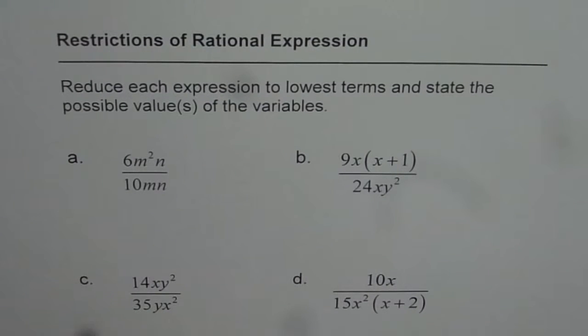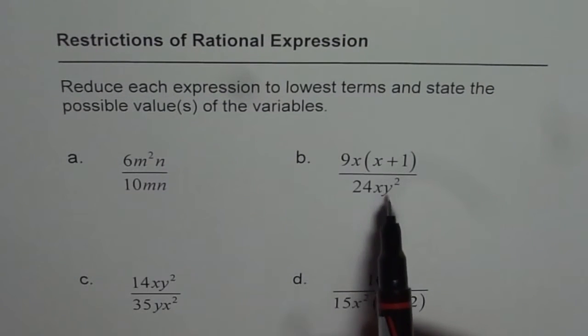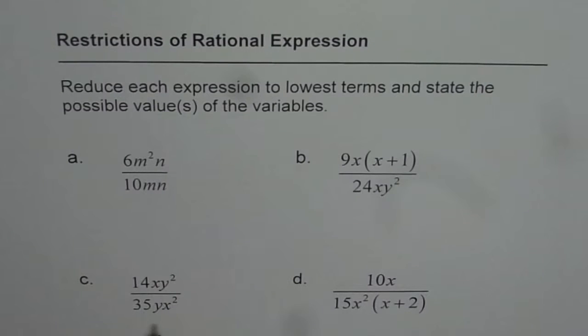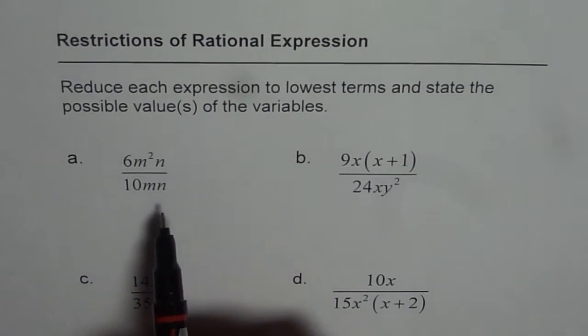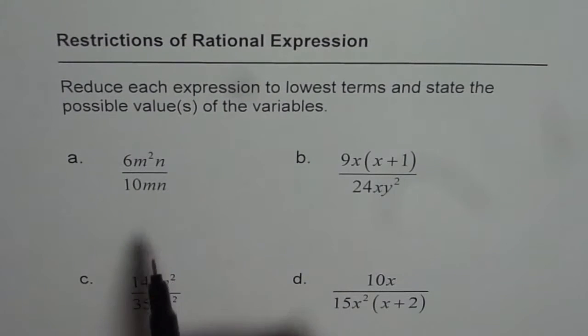In general, all these variables - in this first case it is M and N, then X and Y in the second case, part C and D also. C is X and Y, and in D we have variable X. They can have all real numbers as their values except restrictions. So what we will do is we will only write down the values which they cannot have.